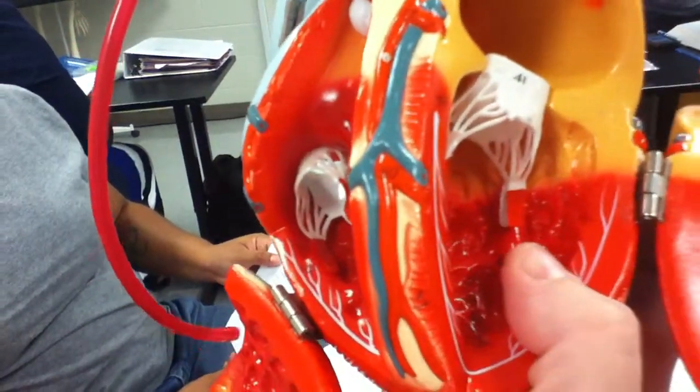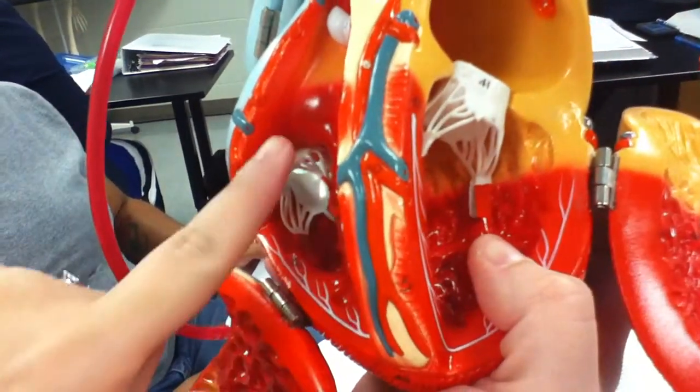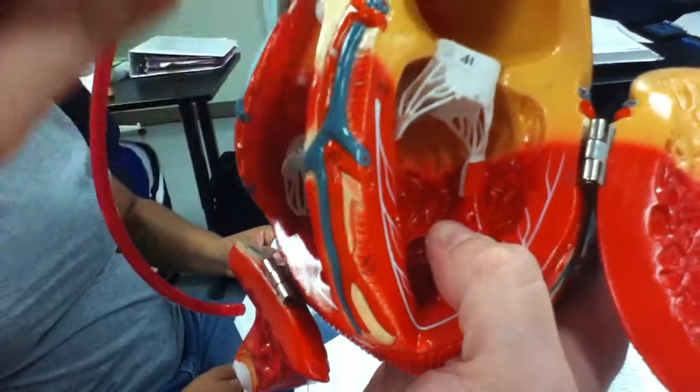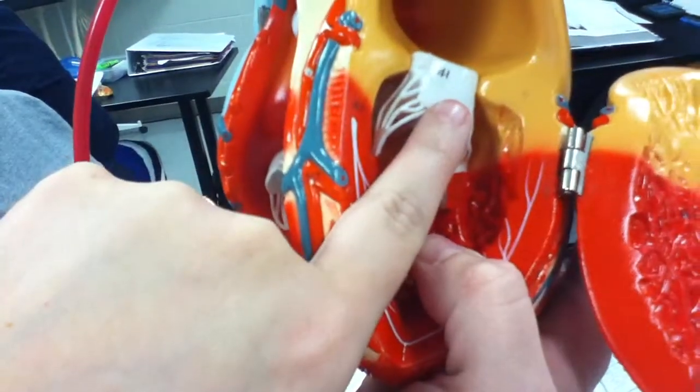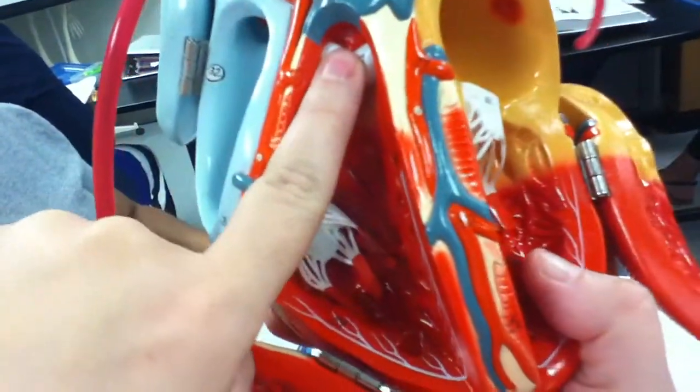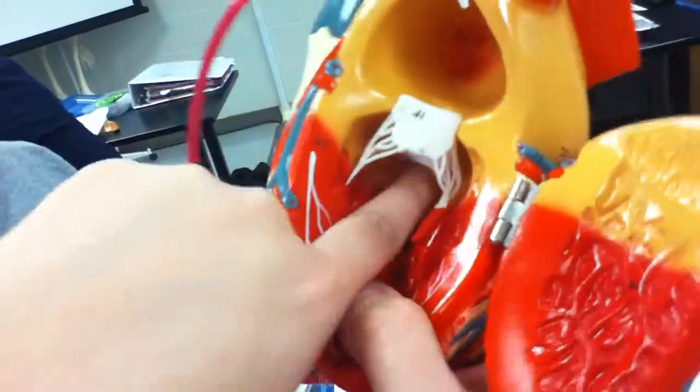The right atrioventricular valve is here. The left atrioventricular valve is here. The pulmonary semilunar valve is here. The aortic semilunar valve is here.